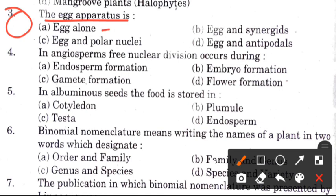Question 3: What is the egg apparatus? Options are: egg alone, egg and synergids, egg and polar nuclei, egg and antipodals. The answer is D, which is egg and antipodals.